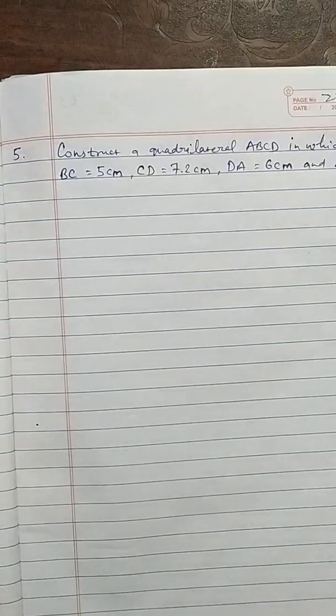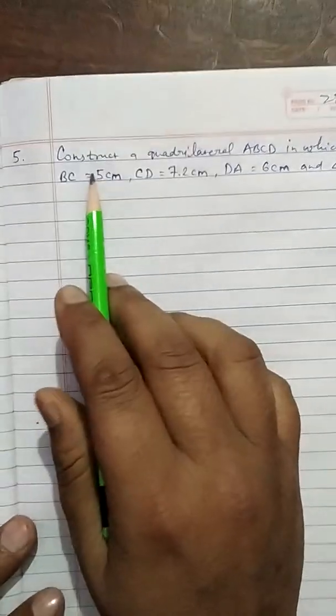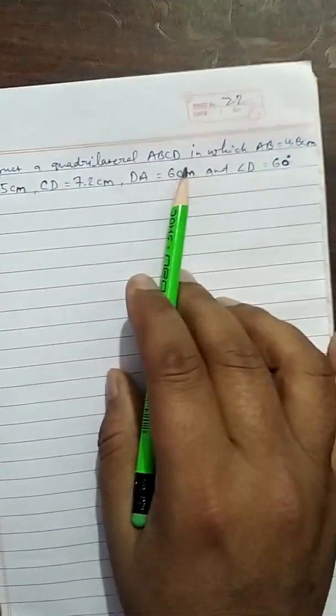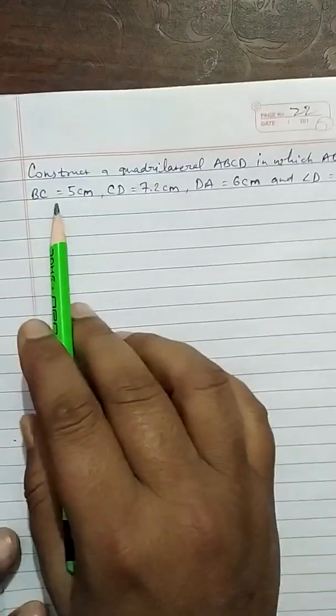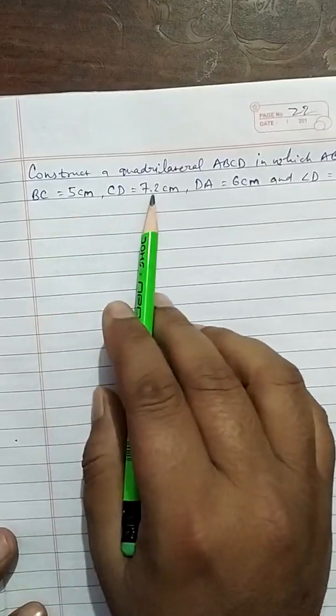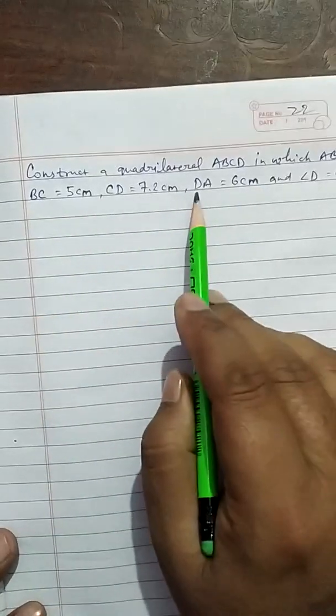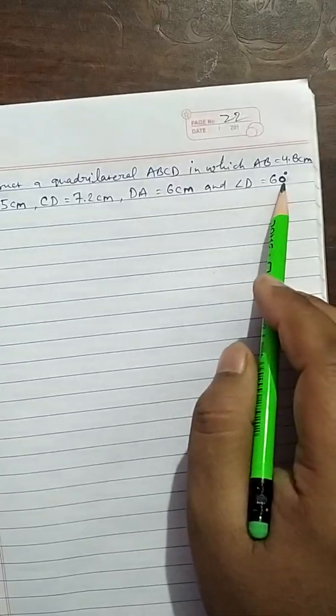Next, we are taking question number 5. Construct a quadrilateral ABCD in which AB equals to 4.8cm, BC equals to 5cm, CD equals to 7.2cm, DA equals to 6cm and angle D is equal to 60 degrees. So to construct a rough sketch first, we have to take angle.